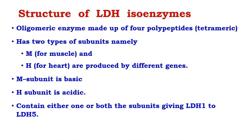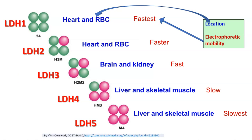LDH isoenzymes are oligomeric enzymes — each LDH contains four polypeptide chains, making them tetrameric in nature. They are made of two different types of subunits: M subunits (from muscle) and H subunits (from heart), produced from different genes. M subunit is more basic; H subunit is acidic. All LDH isoenzymes contain four subunits, but M and H subunits are present in different ratios giving rise to LDH1 through LDH5.